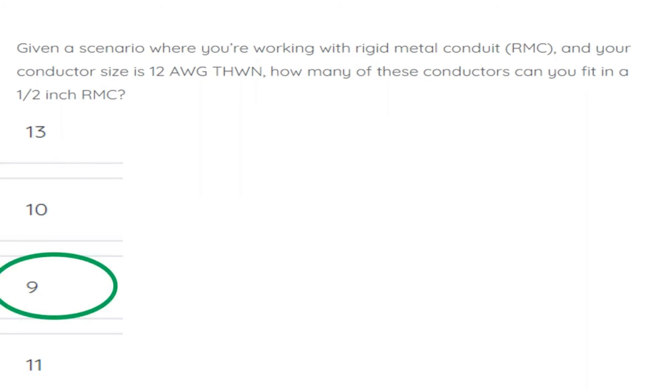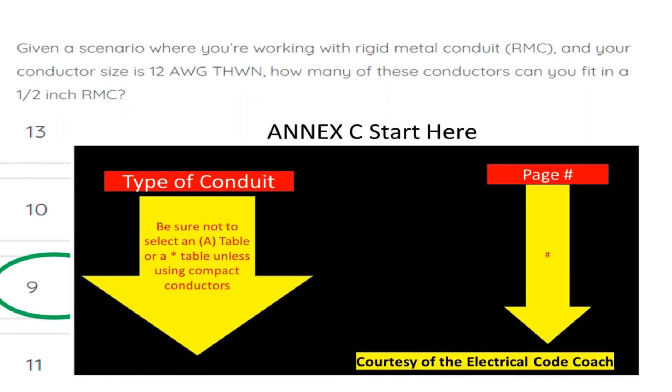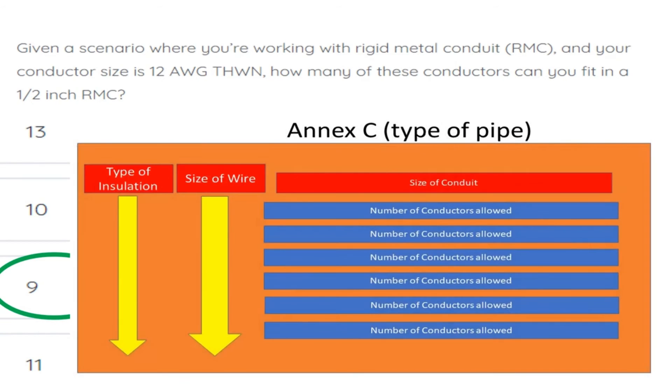For this problem, we're going to use Annex C. Start on the left-hand side to find your type of conduit, then cross over to the page number. When you get to that page, read the black bold heading of the table to make sure you're not in an A-designated table and that you're in the right type of conduit.